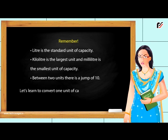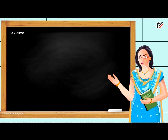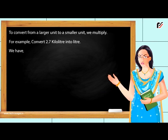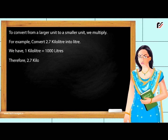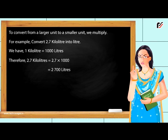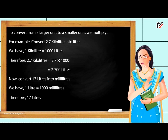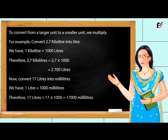To convert one unit of capacity to another — to convert from a larger unit to a smaller unit, we multiply. For example, convert two point seven kilolitres into litres. We have one kilolitre is equal to one thousand litres. Therefore, two point seven kilolitres is equal to two point seven multiplied by one thousand, which equals two thousand seven hundred litres. Now, convert seventeen litres into millilitres. We have one litre is equal to one thousand millilitres. Therefore, seventeen litres equals seventeen multiplied by one thousand, which equals seventeen thousand millilitres.